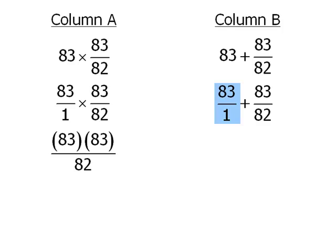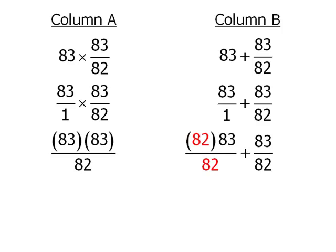So I'll take this fraction and multiply both numerator and denominator by 82 and the other fraction I'll leave as it is. Now that both fractions are written with the same denominator we can combine their two numerators.